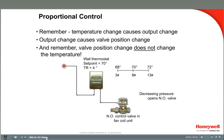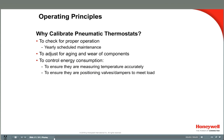The valve position follows the temperature. As the room temperature slowly falls, the pressure decreases, causing the valve to open, which causes an increase in hot water flow to replace heat loss. It was the change in temperature that changed the valve position. Next, I will cover calibrating pneumatic thermostats. To keep the explanation simple, I will show how to calibrate using direct acting thermostats with normally open valves, using Honeywell TP970 thermostats. Always refer to the manufacturer's instructions for detailed steps based on your application and equipment.